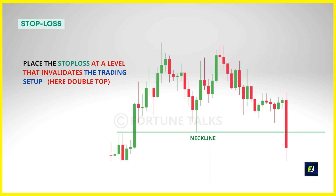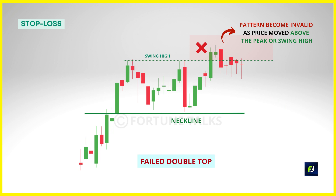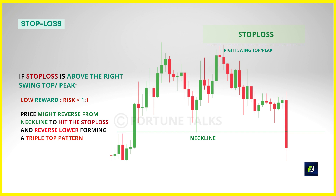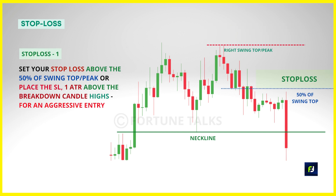Your stop loss should be at a level that if breached will invalidate your trading setup. Since we are trading a double top pattern, the stop loss should be at a level that invalidates the pattern altogether. If the price moves above the swing high, the pattern is invalidated, but placing the stop loss there makes it too large with a very low reward-to-risk ratio. Also, the market can move up to the resistance level and reverse lower after hitting your stop loss, just to form a triple top and then move lower. So I recommend placing your stop loss at the 50% level between the swing top and the neckline, or with adequate buffer using the ATR indicator just above the breakdown candle high.